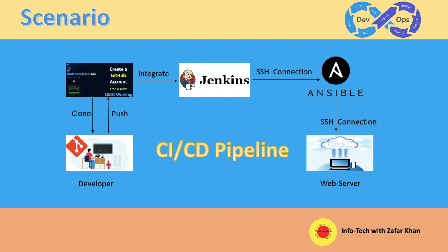Here is the scenario of the project. We have four servers. One is the developer server where Git needs to be installed to clone and push files into GitHub. There is another server called Jenkins server — we will install Git there as well to integrate with GitHub. There is another server called Ansible, to deploy the application through Jenkins. Jenkins and Ansible are connected via SSH. There is another server called Web server to browse the output. Ansible is also connected with the web server via SSH. All four servers along with GitHub are needed to integrate with each other for CICD.